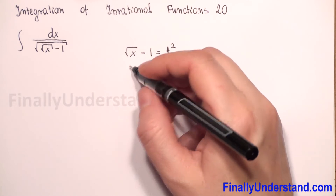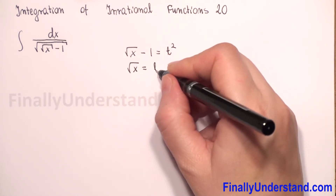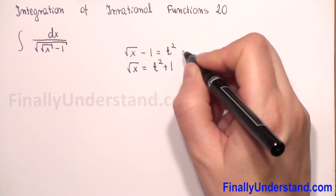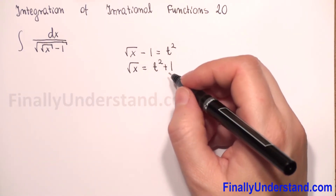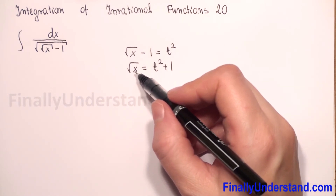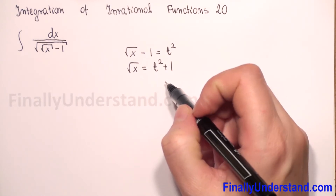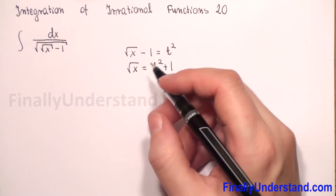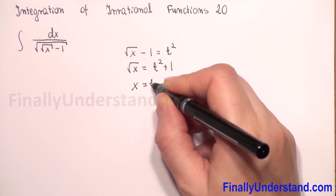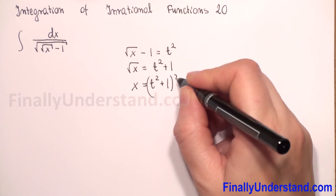So square root of x is equal to t squared plus 1 — I just moved negative 1 to the right side. Now because we have square root of x here, to find x I will take both sides to the second power. So we have x is equal to t squared plus 1, to the second power.